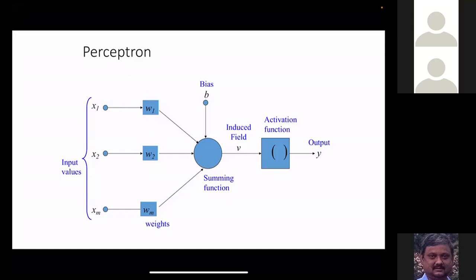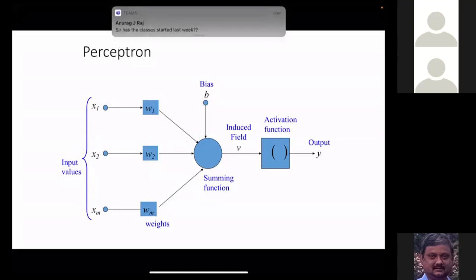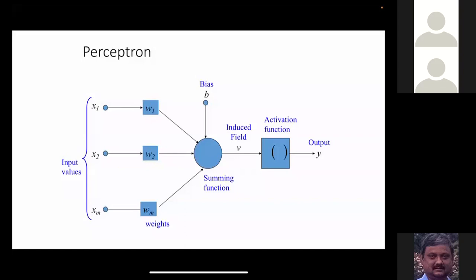You add up these weighted inputs, calculating w1*x1 + w2*x2 + ... + wm*xm, then add a bias term b. The bias can also be written as w0 with a constant input of 1. The output of this summing function is called the induced field v, which equals w1*x1 + w2*x2 + w3*x3 + b.